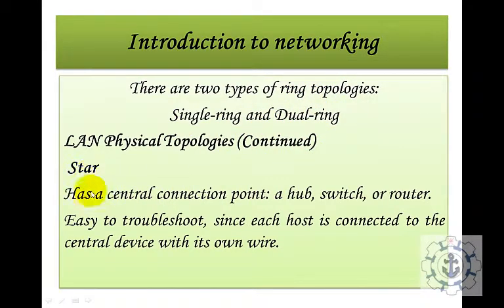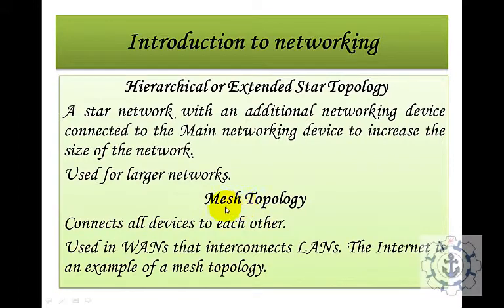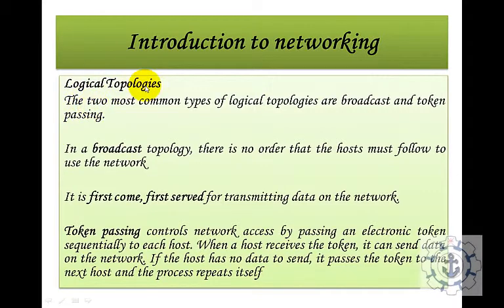In star topology, there is a centralized connection point — a hub, switch, or router — making it easy to troubleshoot since each host is connected to the central device with its own wire. There are also single ring and double ring variants. Hierarchical or extended star topology adds additional networking devices connected to a main device to increase the size of the network, used for large networks. Mesh topology connects all devices to each other and is used in WANs that interconnect LANs — the Internet is an example of mesh topology.